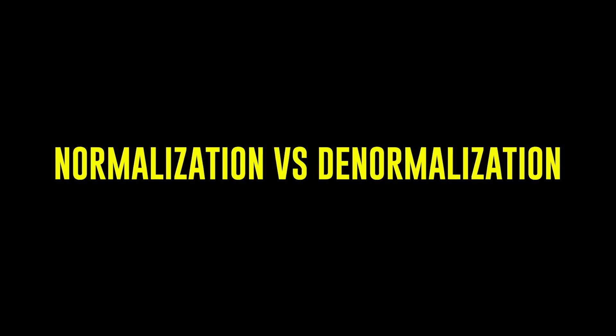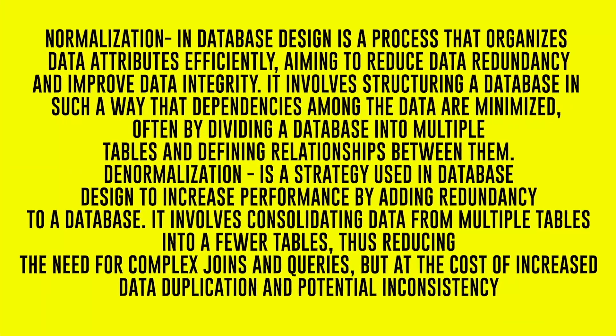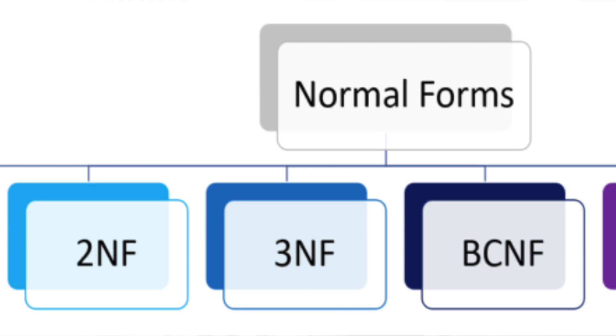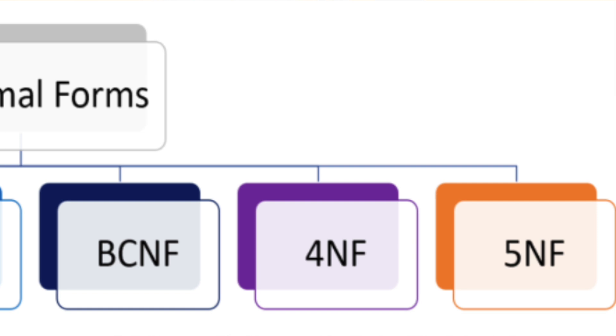Now let's talk about normalization and denormalization — not just interview terms, but important concepts to understand why they exist and what purpose they serve. Normalization exists to reduce duplication of data and increase data integrity in relational database models. It's commonly used in transaction systems because it tends to provide more performant results and minimizes unexpected anomalies, since data isn't duplicated across multiple tables requiring updates in multiple locations. You'll often hear about first, second, and third normal form.